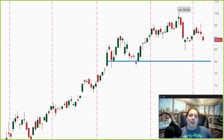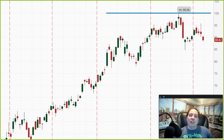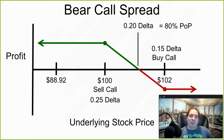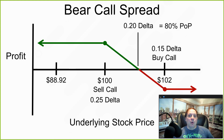Of course, this is based on my bullish outlook. If I wanted a bearish outlook, I could do the exact opposite — a bear call spread. I would sell the call option at the $100 strike with a 25 delta and buy the call option at the $102 strike with a 15 delta. The average would be a 20 delta, and I would still have an 80% probability of profit.